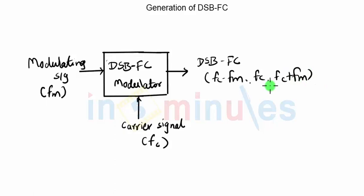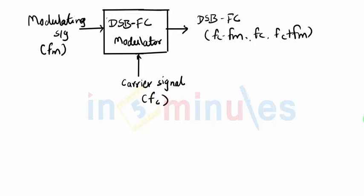Now there are two types of DSBFC modulators. Along with the modulator and other circuitry we will form something called a transmitter. We will design the entire DSBFC transmitter, which apart from the modulator will have a few other blocks — for example, amplifiers to amplify the input signals in the form of the modulating signal and the carrier signal, and many other blocks we will discuss when we look at the actual transmitter diagram. There are two types of transmitters because there are two ways to provide input signals to the modulator.